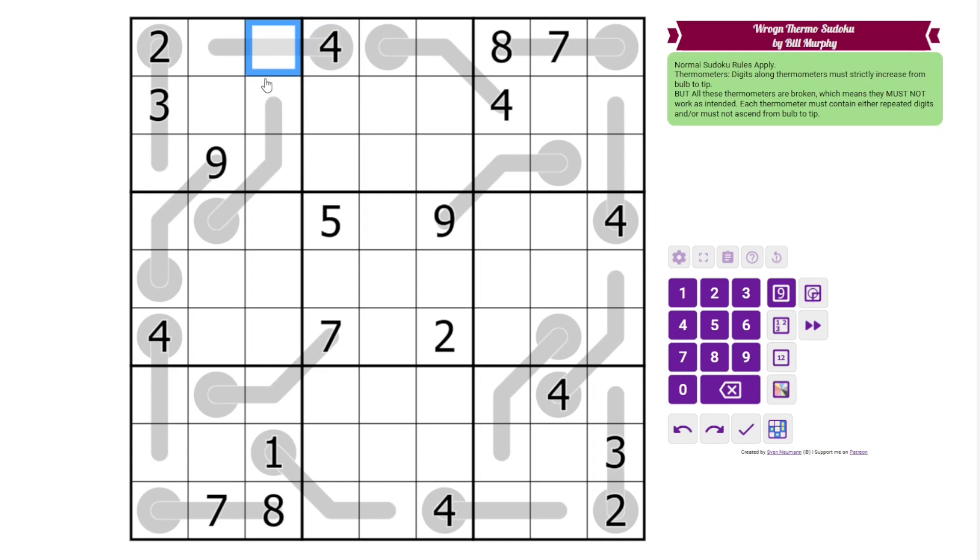So this could go something like 4, 6, 8. However, in this puzzle, all of the thermos have to be wrong. They all have to be broken in some way. And we'll see what that means as we solve the puzzle.